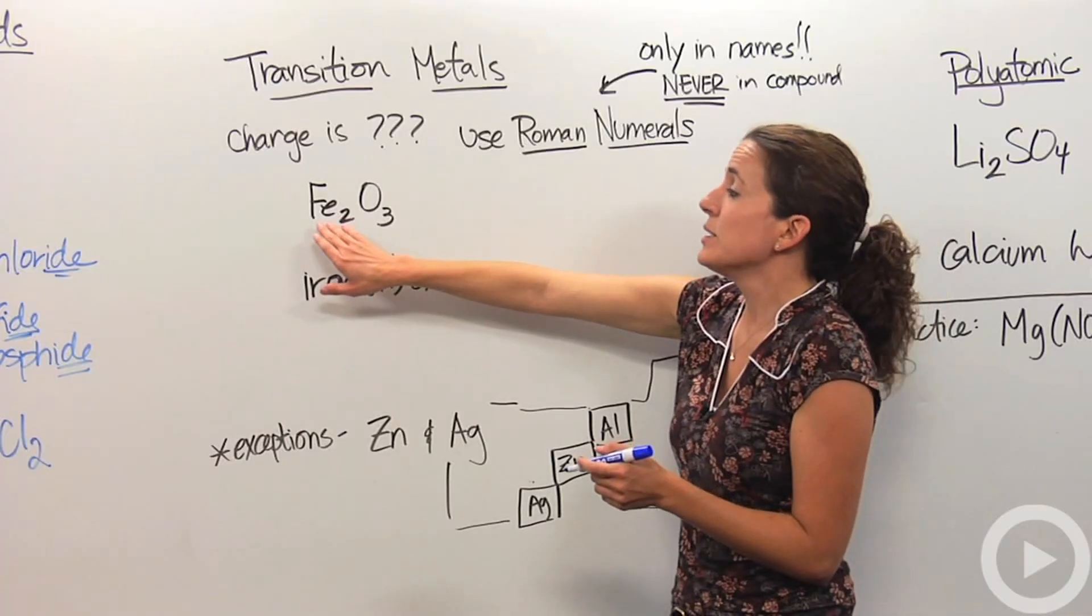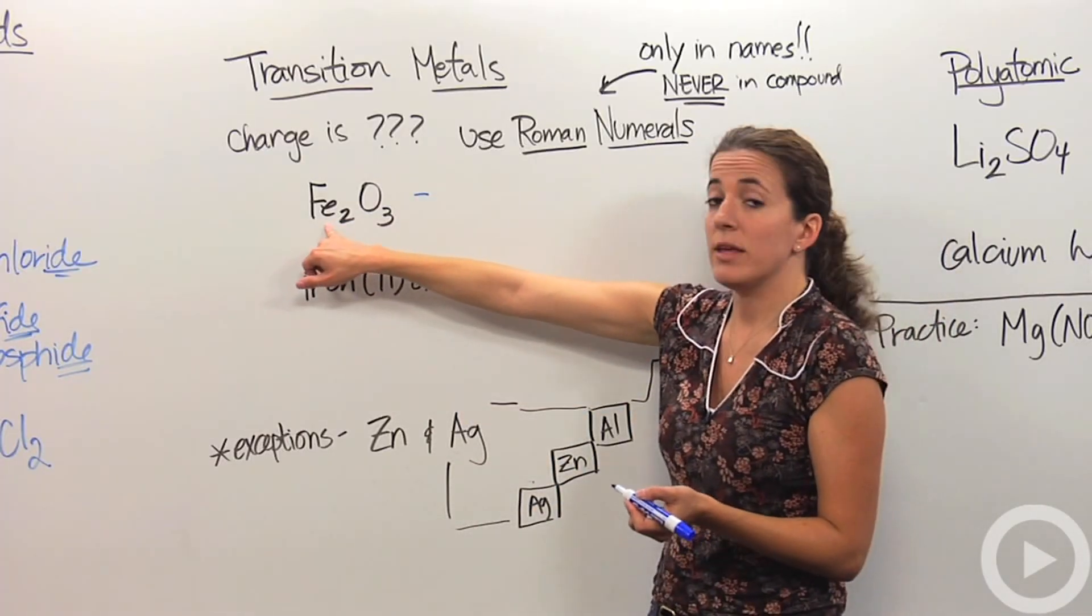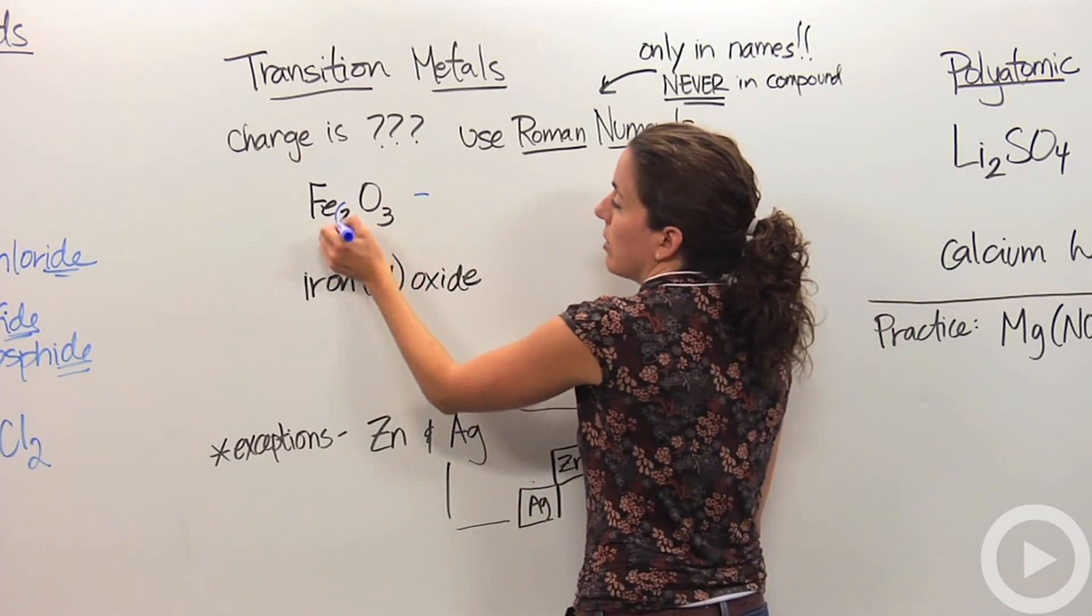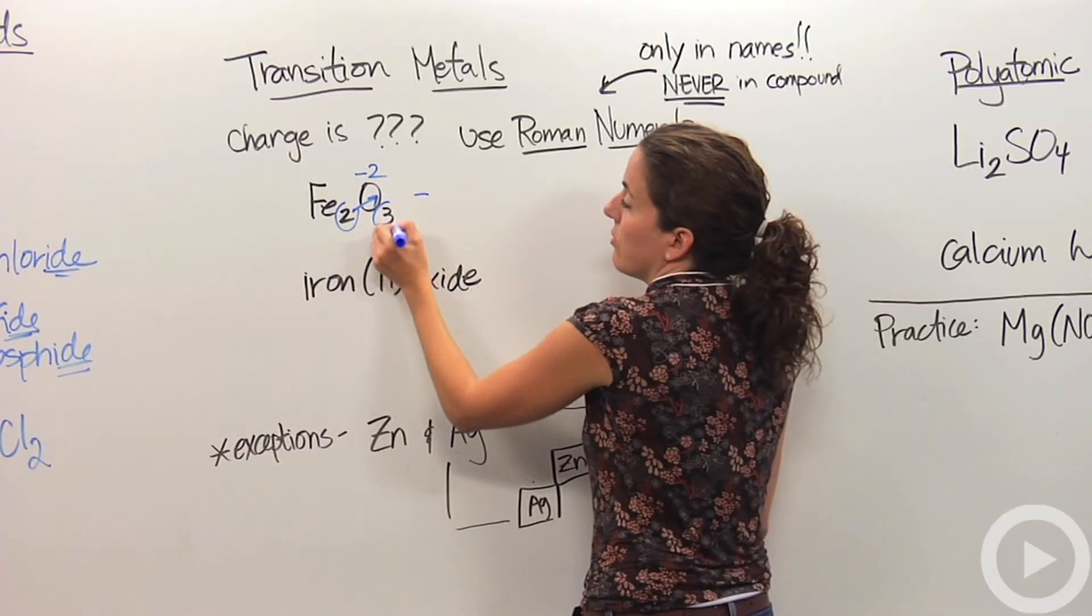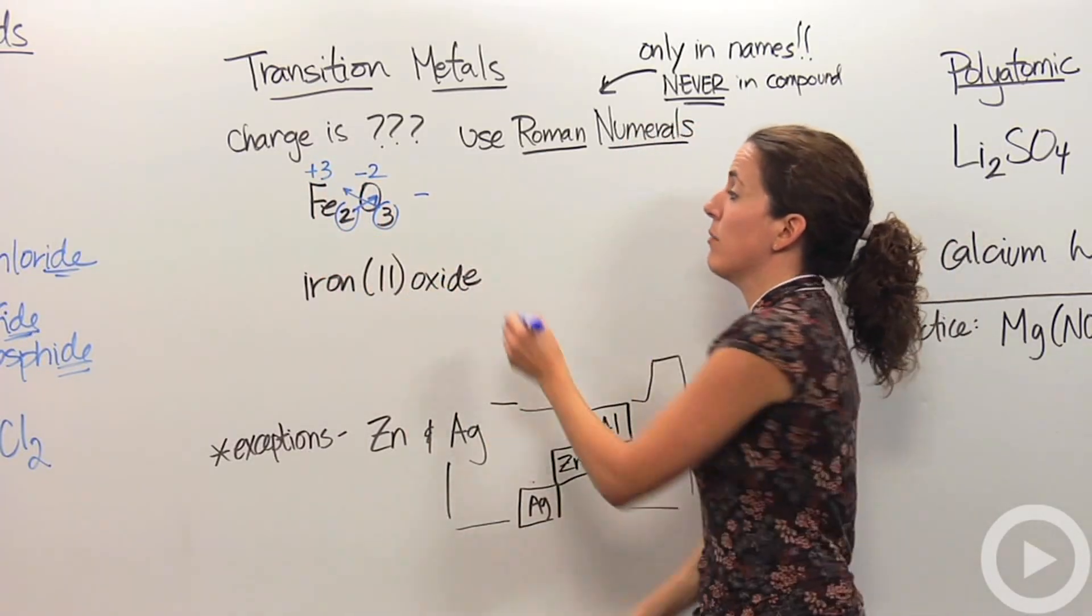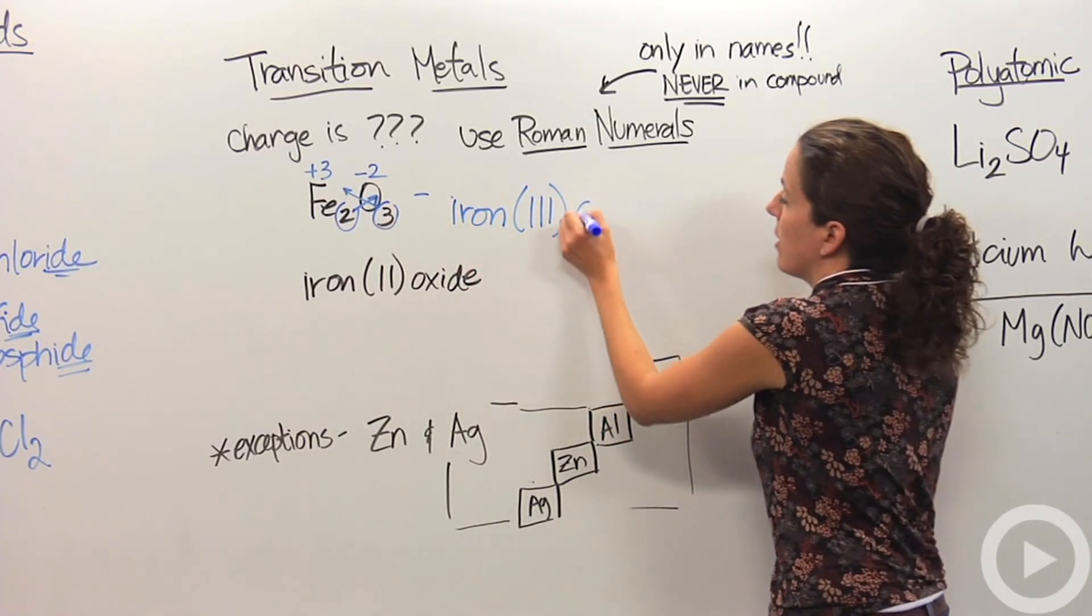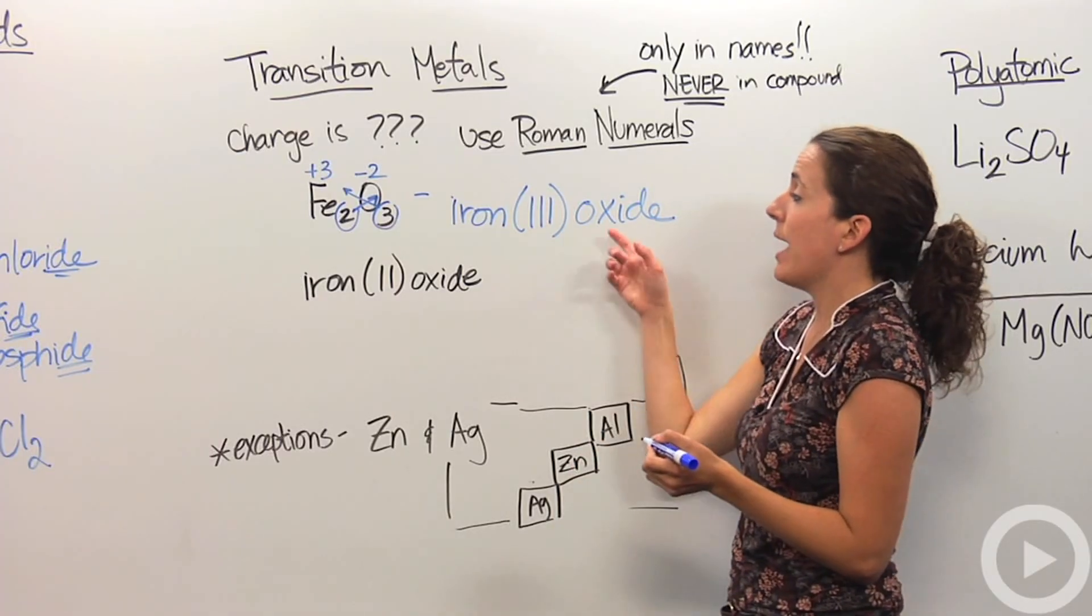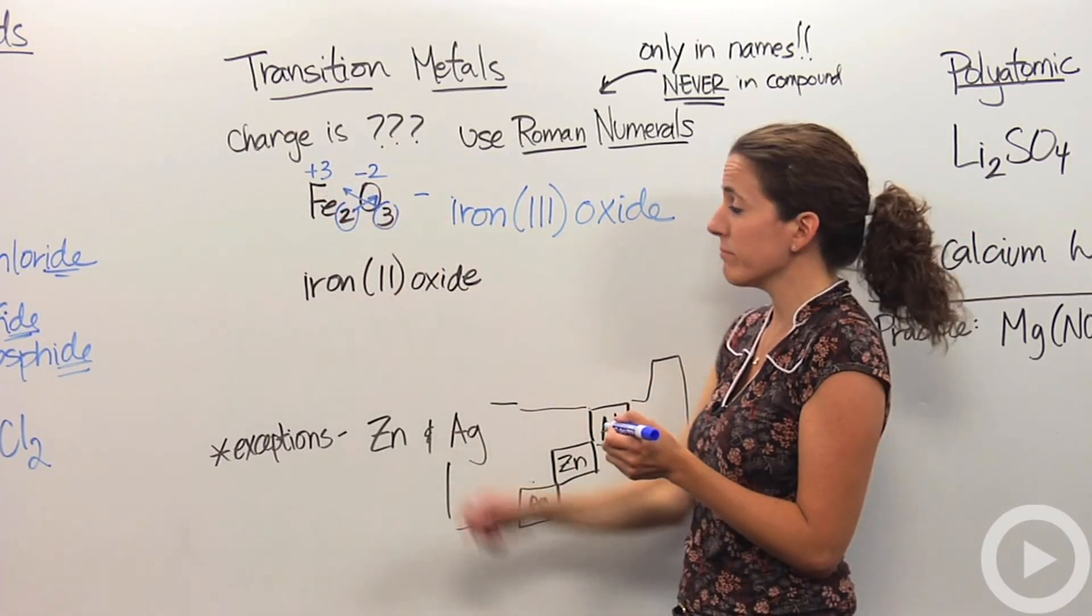Let's do a practice one. We have Fe2O3. We have to figure out the charge of Fe. Using our cross idea, we know this is minus 2. So this guy must be plus 3. We have to indicate that in our name. So iron(III) oxide. Oxide is the same as it was before. This 3 indicates that this iron is a plus 3 charge.